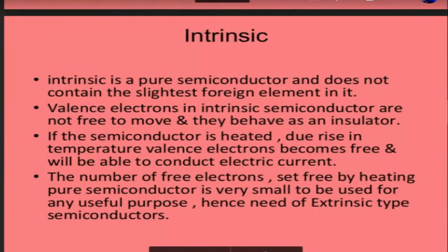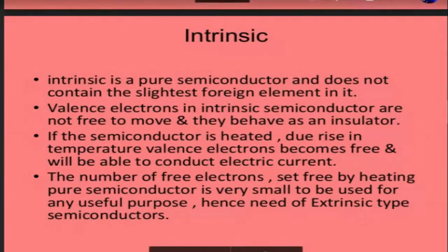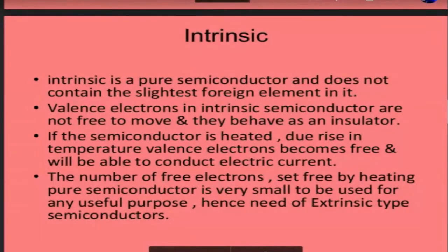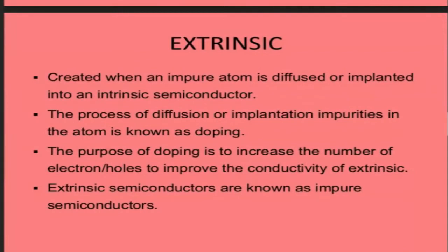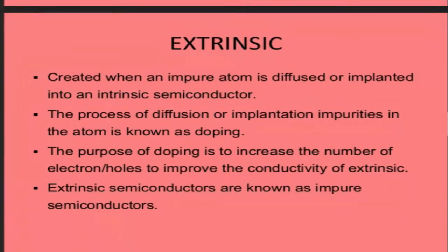The number of electrons set free by heating the semiconductor is very small. Because of heating, not enough electrons become available. So we need to increase the availability of free electrons in a different way. That is how the second type of semiconductor was invented — called the extrinsic semiconductor.